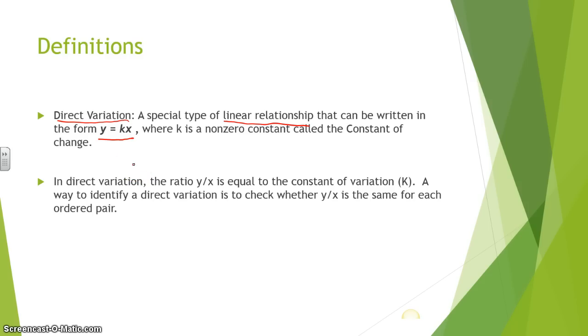In direct variation, the ratio of y divided by x is equal to the constant of variation k. A way to identify a direct variation is to check whether y divided by x is the same for each ordered pair. So we are going to be working with the formula y equals k times x, or another way to think of this is y divided by x is going to give you your k and your k should be constant. Meaning every time you divide y divided by your x, you're going to get a value k which should be the same value every time, especially when you're working with charts. So we're going to be working with some examples here of direct variation and finding our constant k.